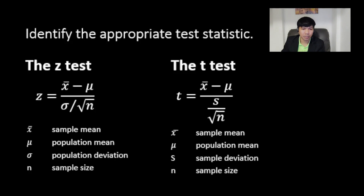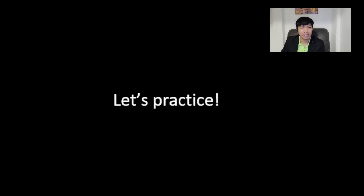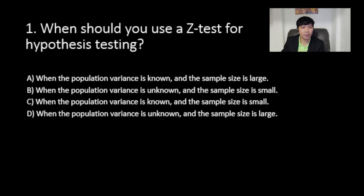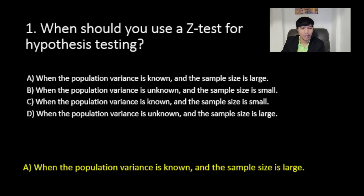Now let's put your understanding to the test. I'll be asking you five questions — try to answer each item correctly. Number one: when should you use the Z-test for hypothesis testing? The answer is letter A: when the population variance is known and the sample size is large.